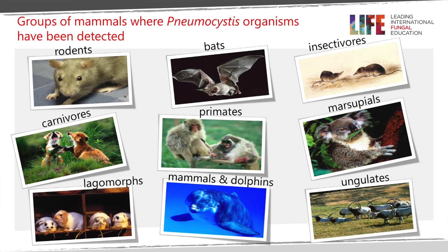There are many different animals that have Pneumocystis in their lungs, and each species of mammal has a different species in its lungs. You can see here examples with specific species in rodents, bats, insectivores, marsupials, ungulates, mammals and dolphins, primates, various carnivores, and also rabbits and lagomorphs. Each different species has co-evolved with the different species of mammal it resides within, and they have been named separately for each different host species.